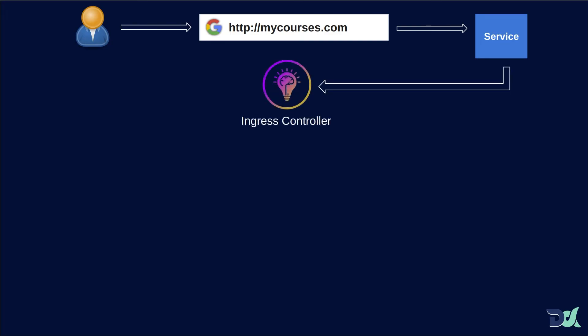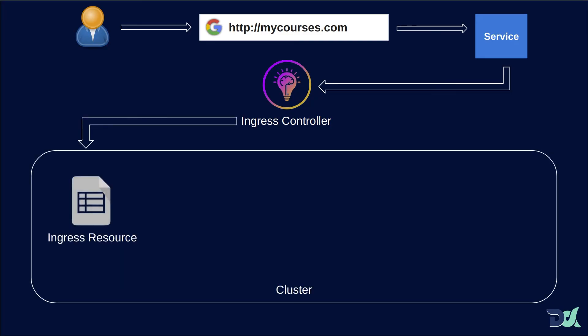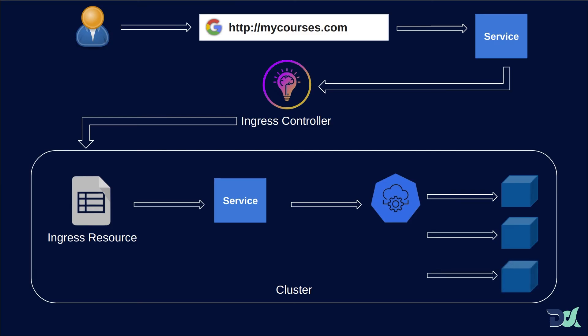According to our architecture design, the flow works as follows: the client request for mycourses.com first goes to the Ingress controller service, because when you deploy the Ingress controller you deploy a deployment and service that targets it. Inside the cluster, the Ingress controller reads the Ingress resource YAML file and its routing rules. According to the rules, if the request is for mycourses.com, it sends the traffic to the homepage deployment via the associated service.